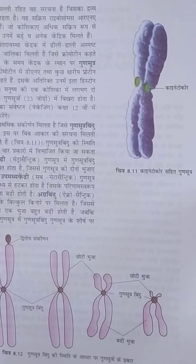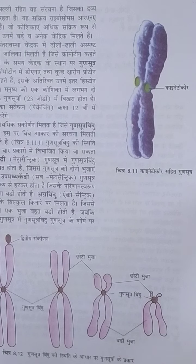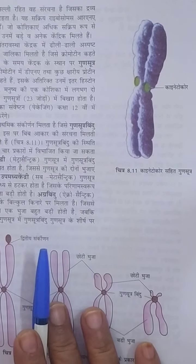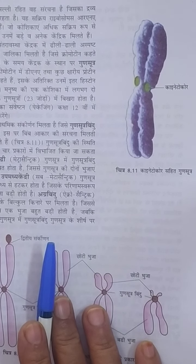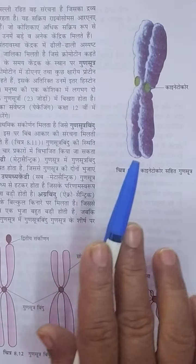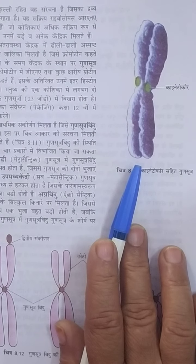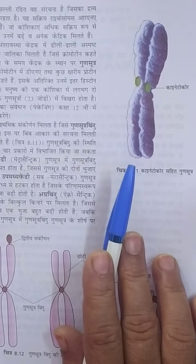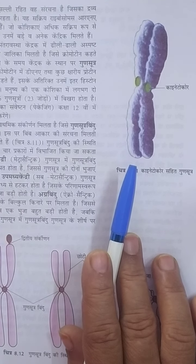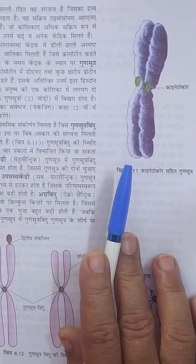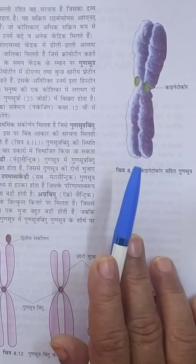Good morning students. Today we will learn about chromosomes, according to the chapter 'Cell: The Unit of Life'. The term chromosome is formed from two Greek words: 'chroma' meaning colored and 'soma' meaning body.